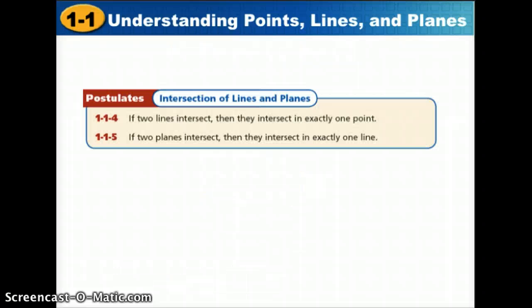Here are two more postulates we want to learn for today. If two lines intersect, then they intersect in exactly one point, never two. Lines can't curve, so they can only intersect once. If two planes intersect, then they intersect in exactly one line. We'll look at some examples of this tomorrow.